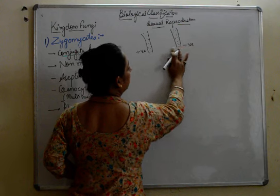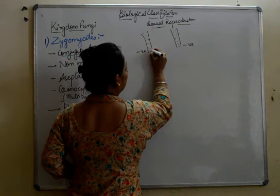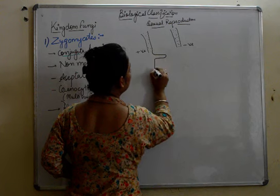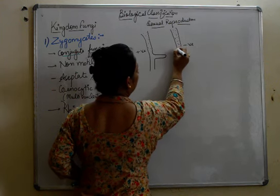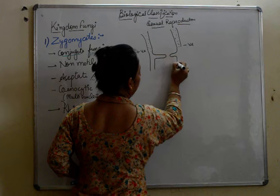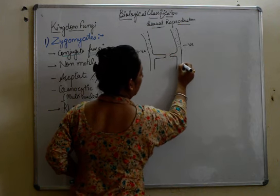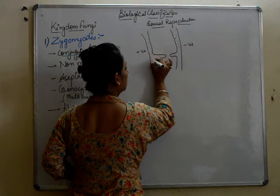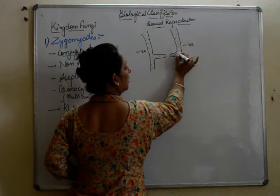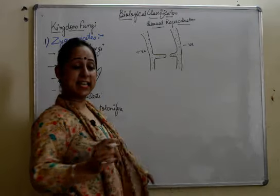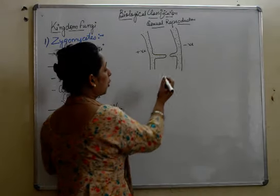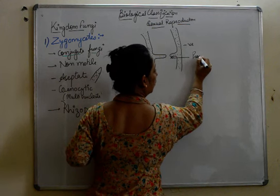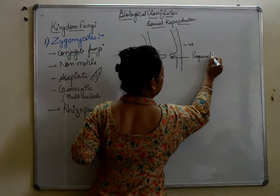These two hyphae, after a while, will form extensions towards each other, with the nucleus also moving towards these extensions. These extensions are known as pro-gametangia.